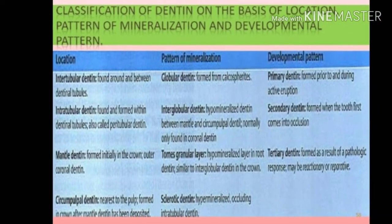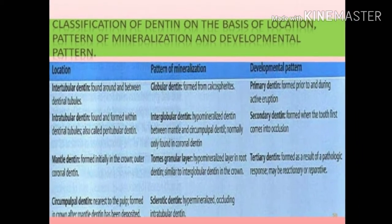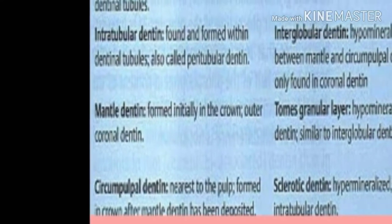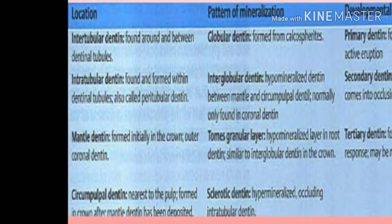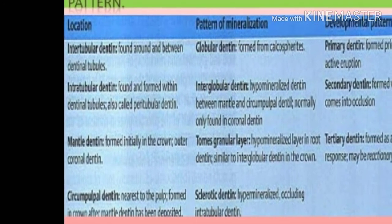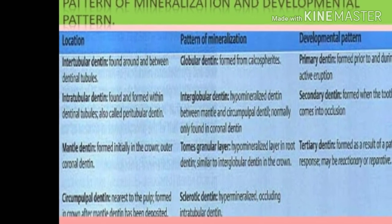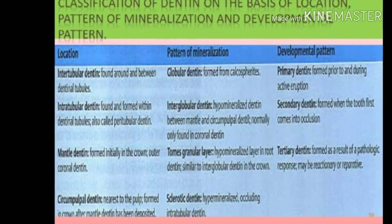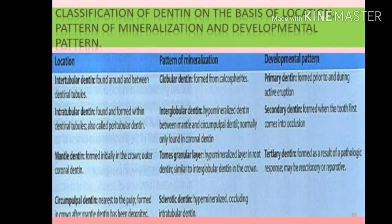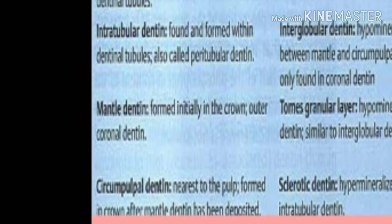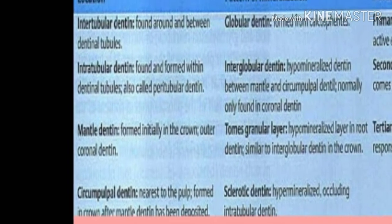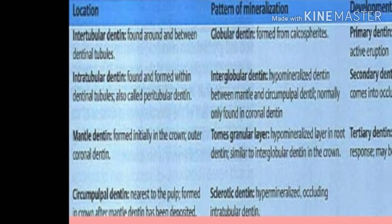On the basis of pattern of mineralization, dentine is divided into: globular dentine, interglobular dentine, granular layer, and sclerotic dentine. Globular dentine is formed from calcospherites. Interglobular dentine is hypomineralized dentine found between the mantle and the circumpulpal dentine, normally only found in the coronal dentine. The granular layer is a hypermineralized layer in the root dentine, similar to the interglobular dentine in the crown. Sclerotic dentine is hypermineralized, with occluding intratubular dentine.